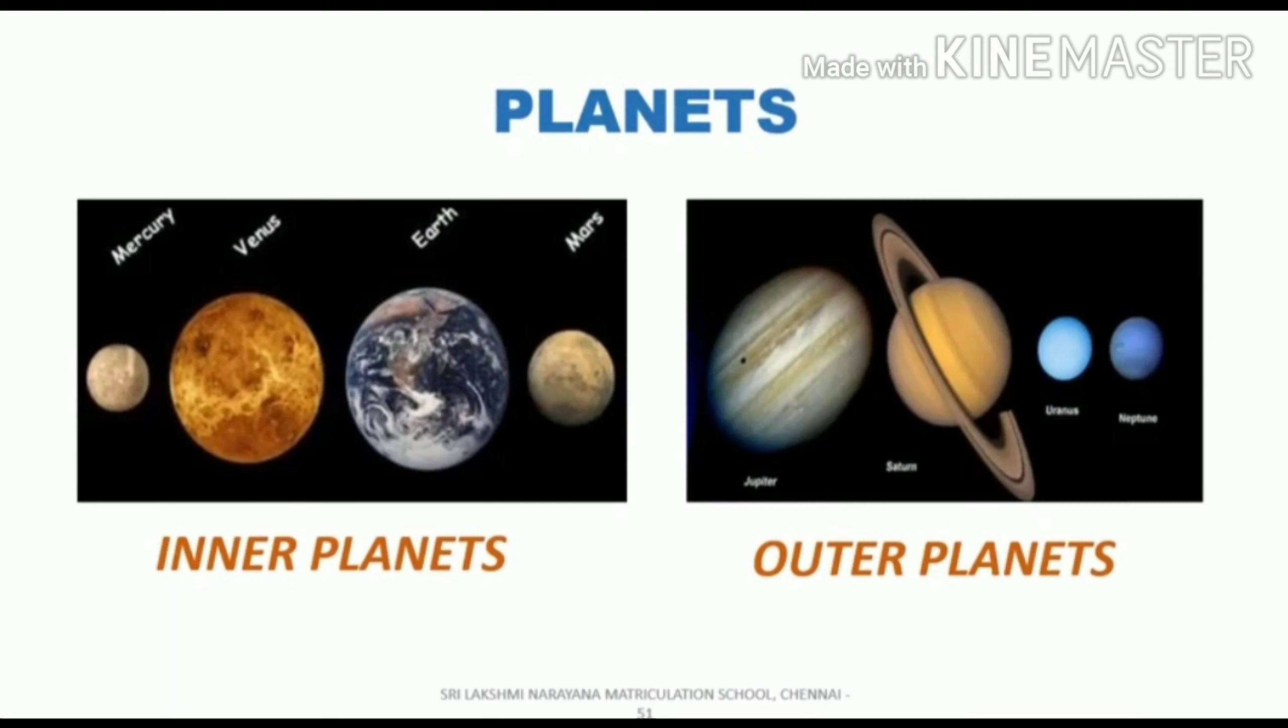And these 8 planets are classified into inner planets and outer planets. The inner planets are Mercury, Venus, Earth and Mars. And the outer planets are Jupiter, Saturn, Uranus and Neptune.